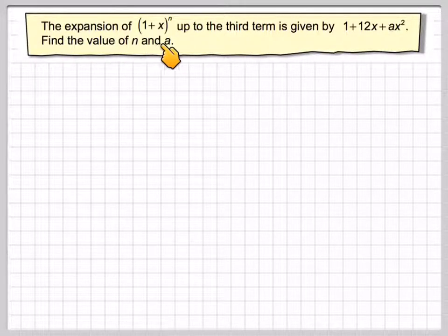The expansion of (1 + x)^n up to the third term is given by 1 + 12x + ax². Find the value of n and a.